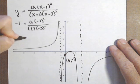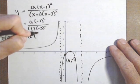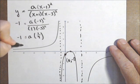So we have negative one equals a times a positive one-ninth because of the squares. So a equals negative nine.